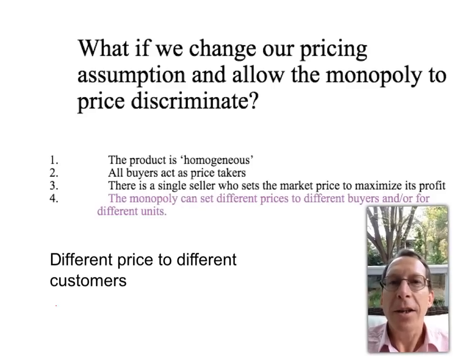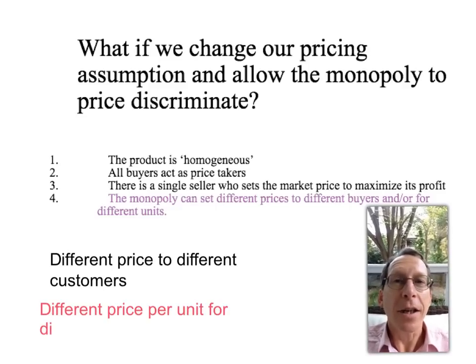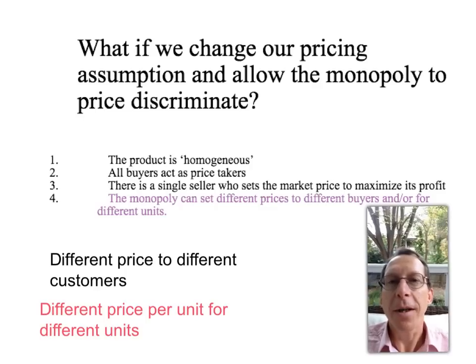Alternatively, the monopoly may charge a different price depending on how many units you buy. So if you buy only a couple of units, you may pay a high price per unit, but you may get a discount if you buy more units. Volume discounts are just a form of price discrimination.